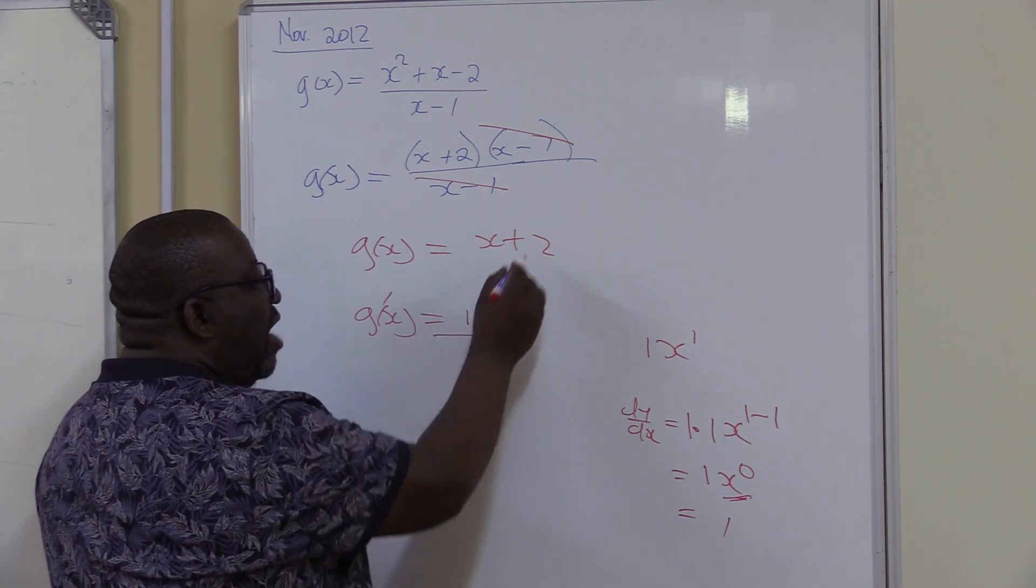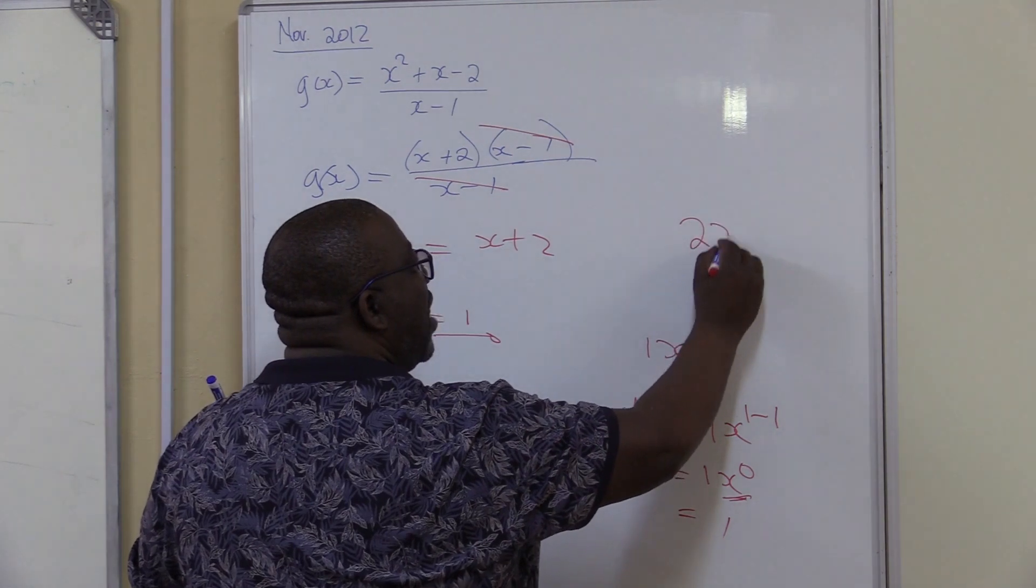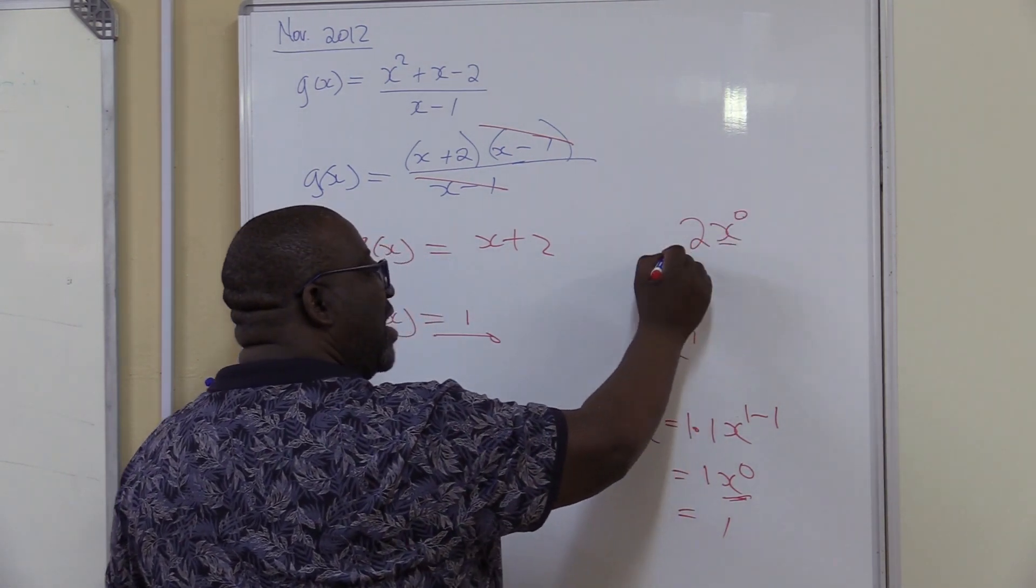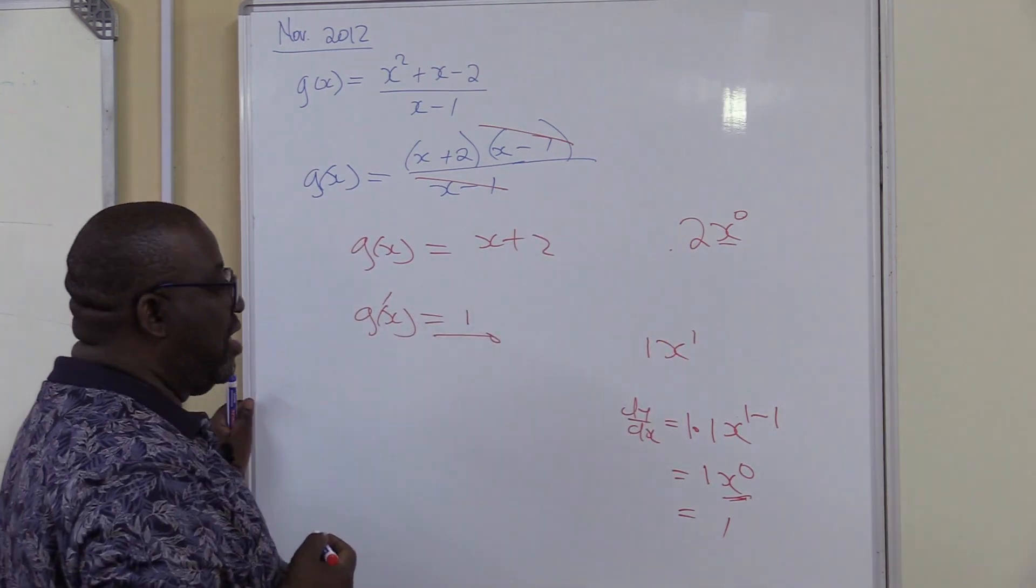So this will be 1 plus 2. This becomes the answer. How do you differentiate 2? 2 is the same as 2x to the power 0. Any number to the power 0 is 1. So if I say 0 times anything, it will be 0. That's why that becomes 0.